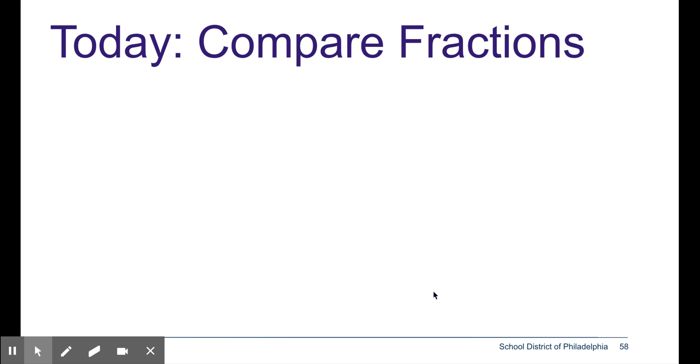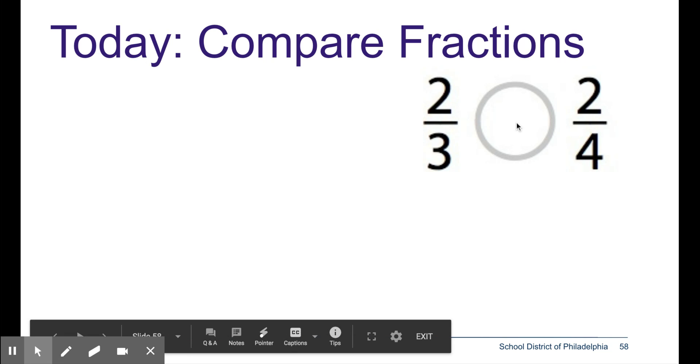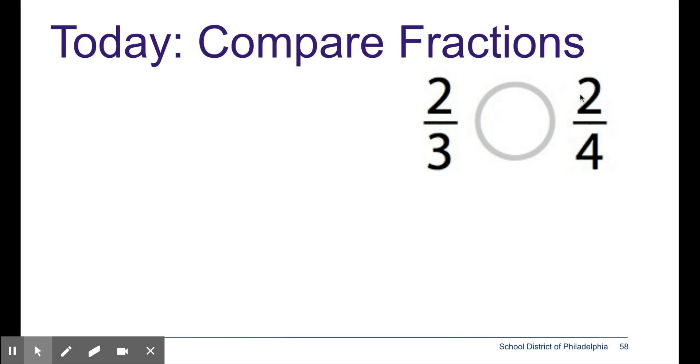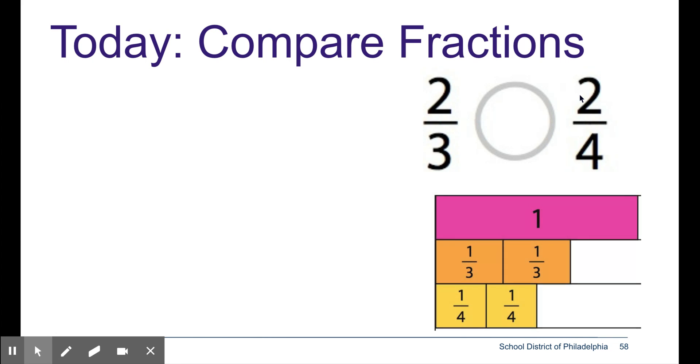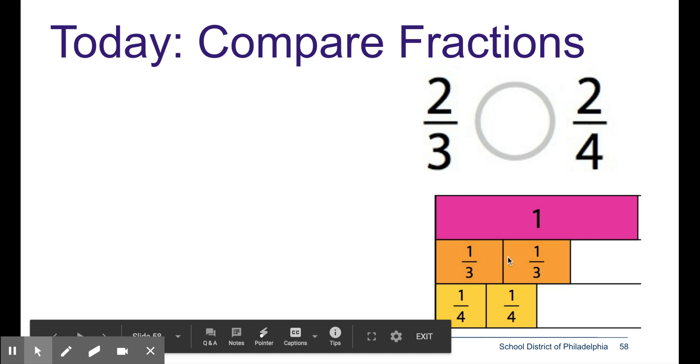Let's look at another one. This time we still have the same numerator but instead of 1 they both have the numerator 2. So when I look at my visual I have 2 third size pieces for 2 thirds compared with 2 fourth size pieces for 2 fourths.